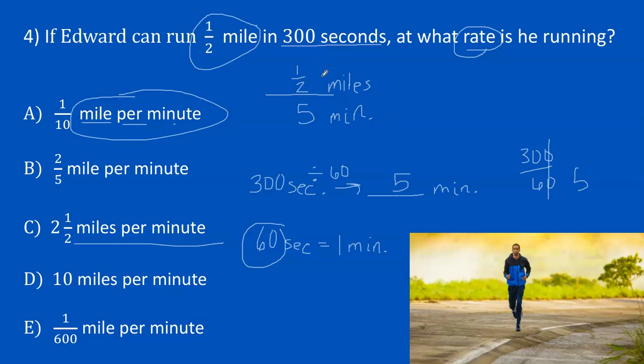Alright, now this is a complex fraction because we have a fraction that contains a fraction. So the first step in solving a complex fraction is to make sure both the numerator and the denominator are fractions. So I'm going to change the 5 to a fraction by placing it over 1.